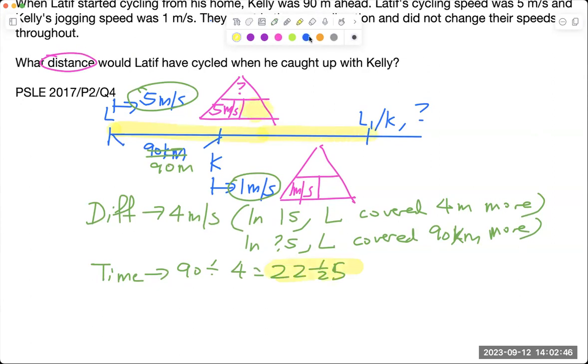Which means that we can actually put 22 and a half inside here. And using the DST triangle, can you see that to find the distance, we just need to take this times this, taking note that the unit must be correct.